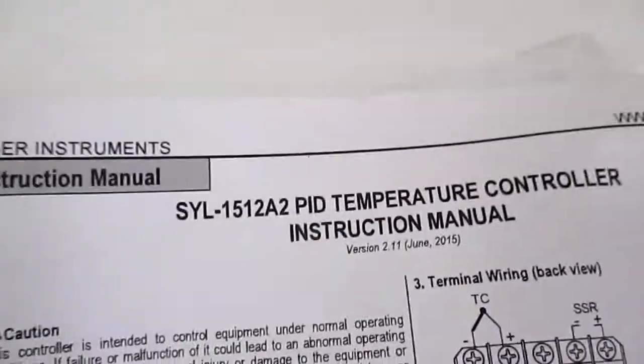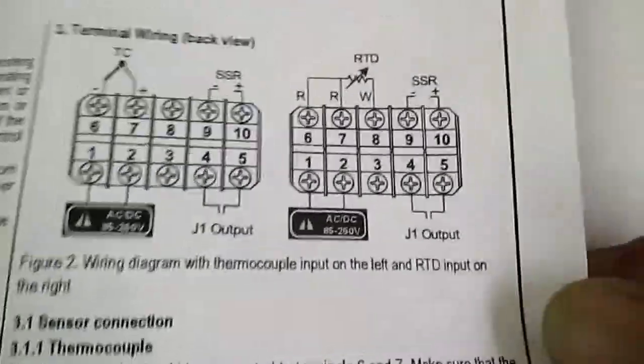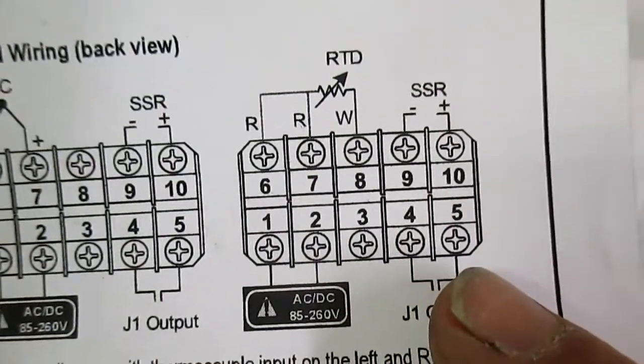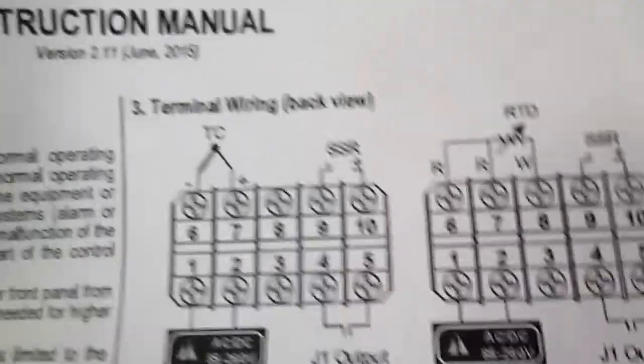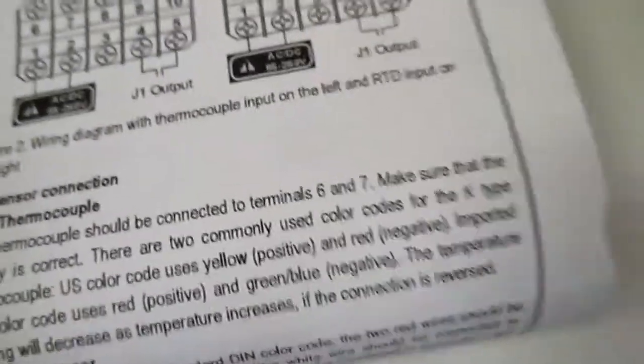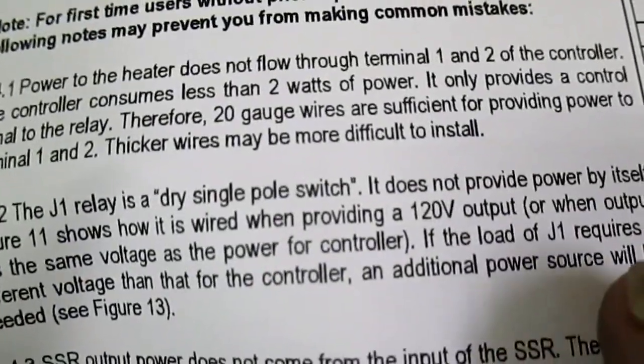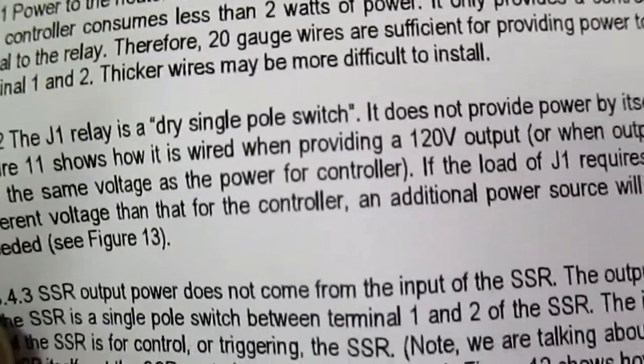Here we have the back of the PID unit that I have. Mine I got from Auber and mine's the 512 A2. This is for mine, so each one's going to be a little bit different. But if you look on the back of these, they have what they call the J1 output right there. Those are the two screws we're going to be hooking the buzzer into. They have no power at all, they're just a relay that makes a contact. If you read on the other sheet over here, J1 relay is a dry pull switch. It doesn't provide any power, so it's just a contact on and off. So that's where we're going to hook our leads to, and that'll make the alarm work for our desired temperatures.